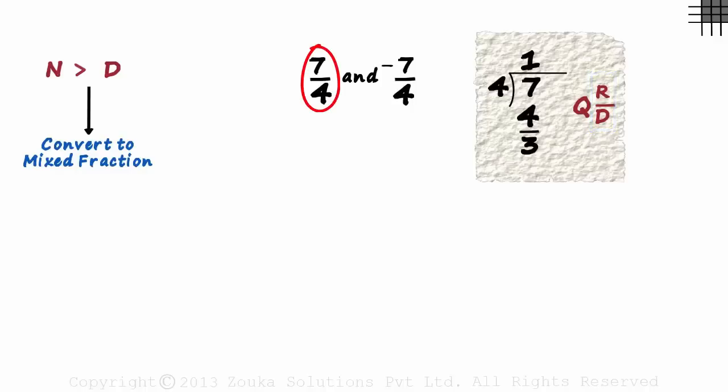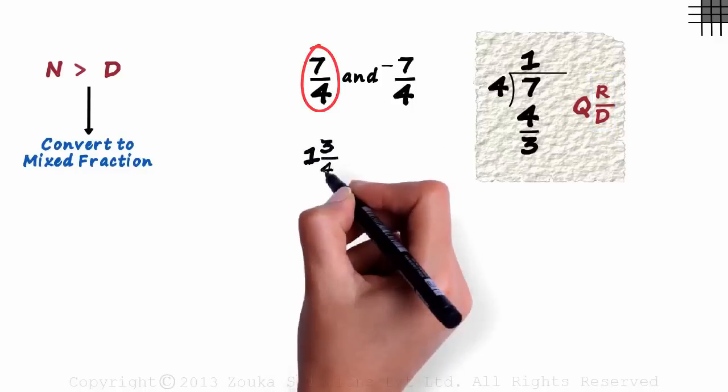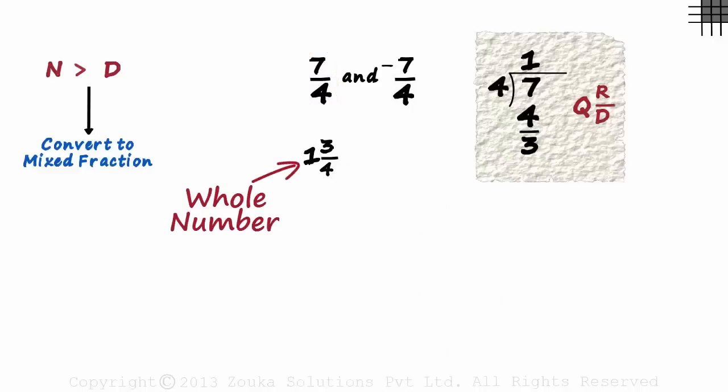So we can write 7 by 4 as 1, 3 by 4. 1 is called the whole number part and 3 by 4 is called the proper fraction part.